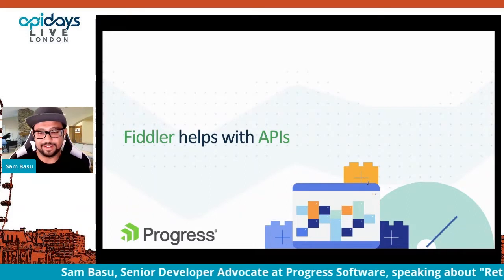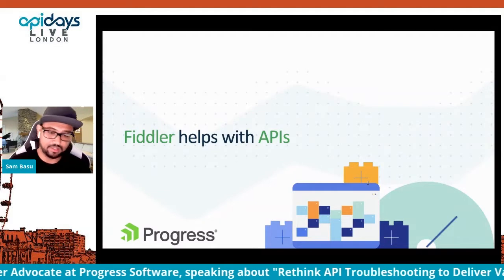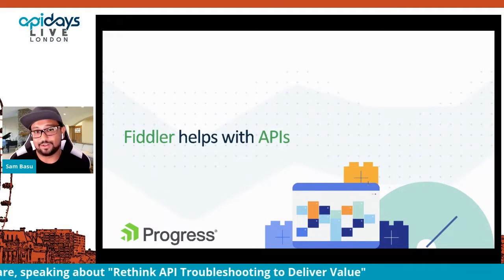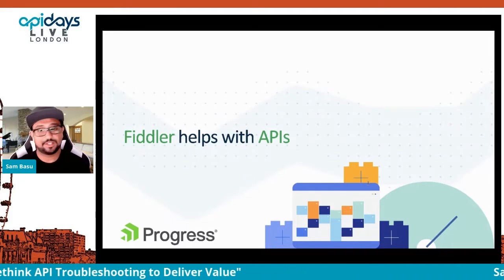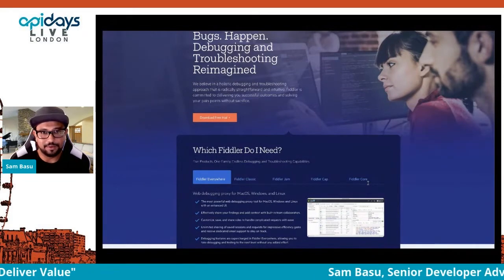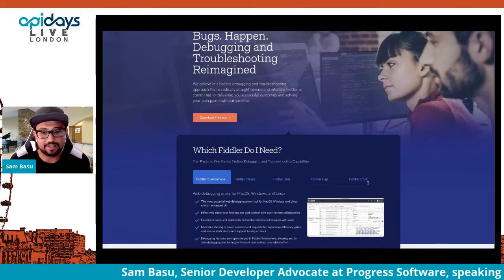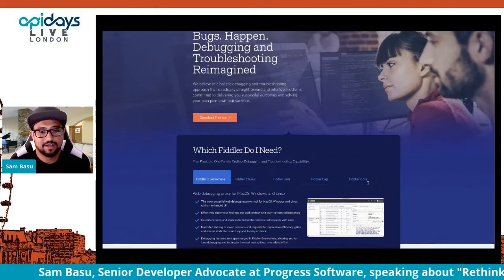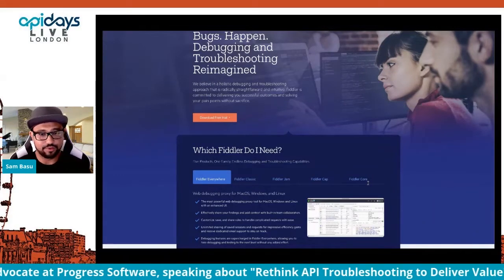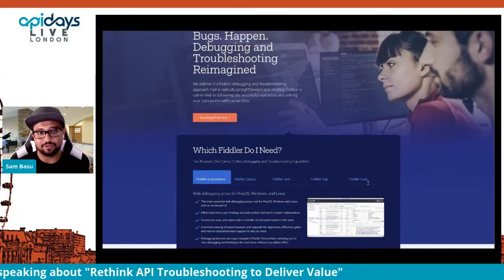For APIs specifically, we have a product called Fiddler, which hopefully you've heard of. I'm going to show you some of the latest things we've done with it. A lot of .NET developers have grown up using Fiddler, but a lot has evolved. The Fiddler family now has five different products, so look through and see which one works for you.